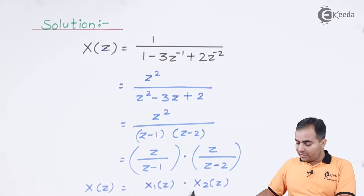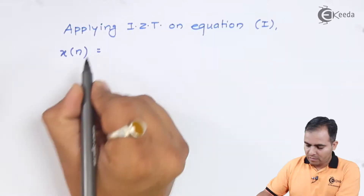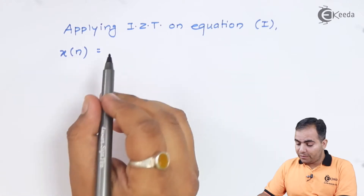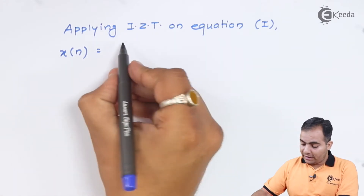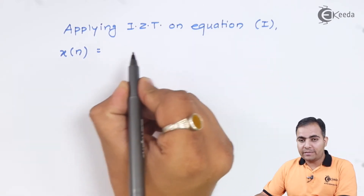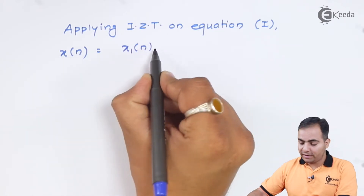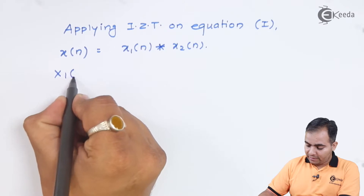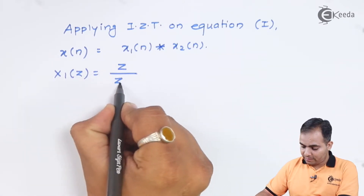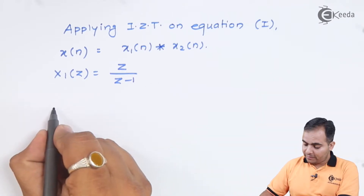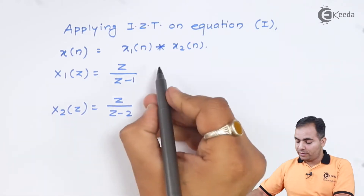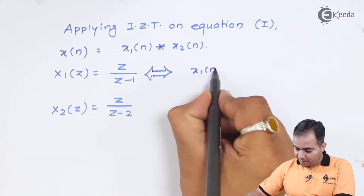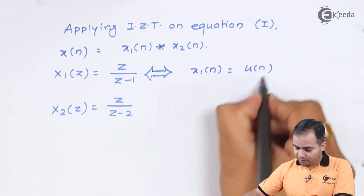Now I will apply the inverse Z-transform. The product of two Z-transform functions, when inverse-transformed, gives the convolution of their corresponding discrete sequences. So x(n) = x₁(n) * x₂(n). For x₁(z) = z/(z-1), the inverse Z-transform is the unit step u(n).